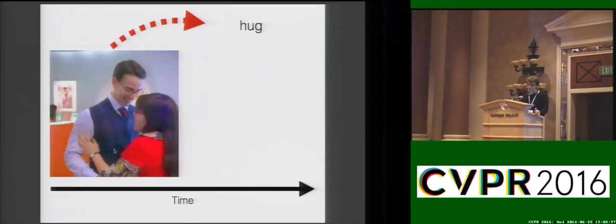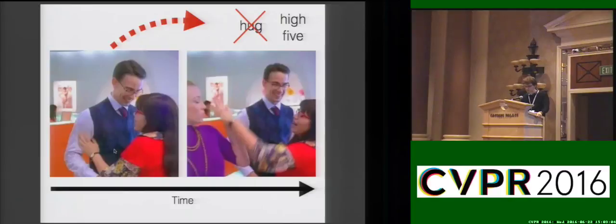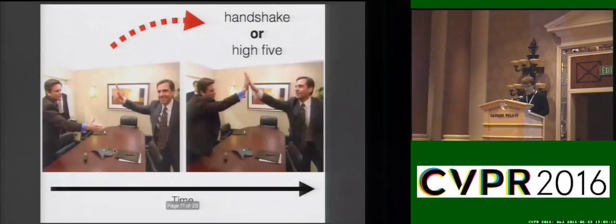However, prediction is a very hard task. Sometimes something unexpected can happen — this person enters the scene and changes what prediction might happen. And even some scenes are just ambiguous, so you cannot predict what is going to happen.